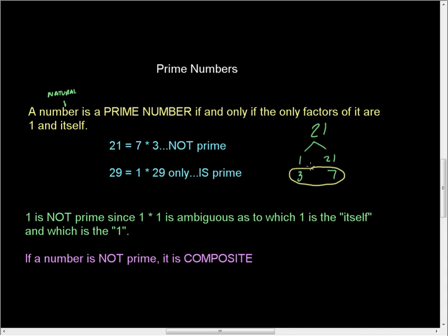Because another pair exists, 21's not prime. 29, however, is. And so, the only factors of 29 are 1 and 29. No others.